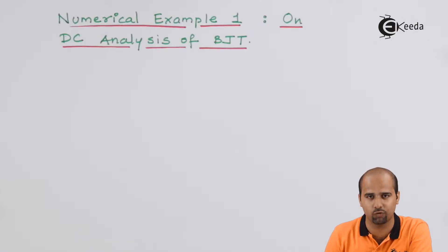This is the first example that we'll have to learn for BJT DC analysis. So we'll start from the simple analysis.